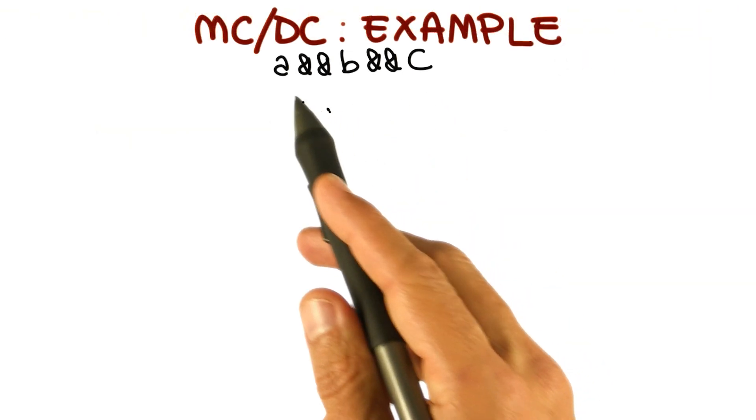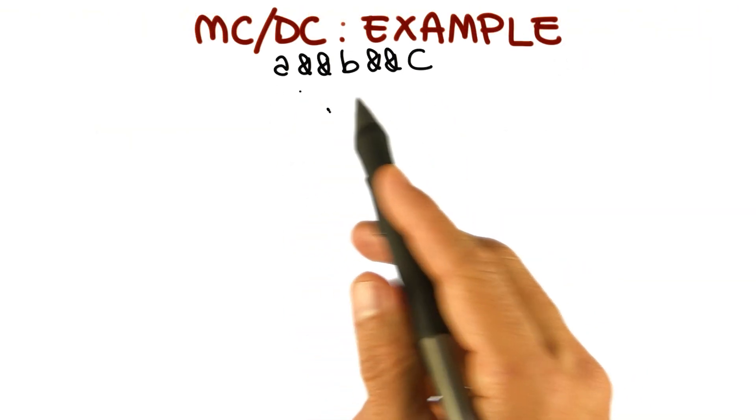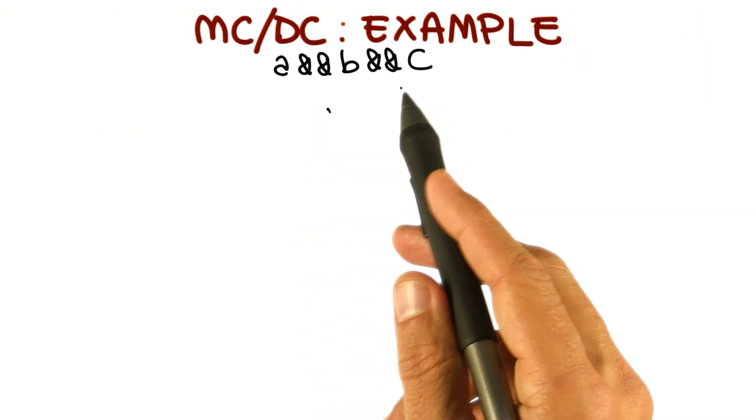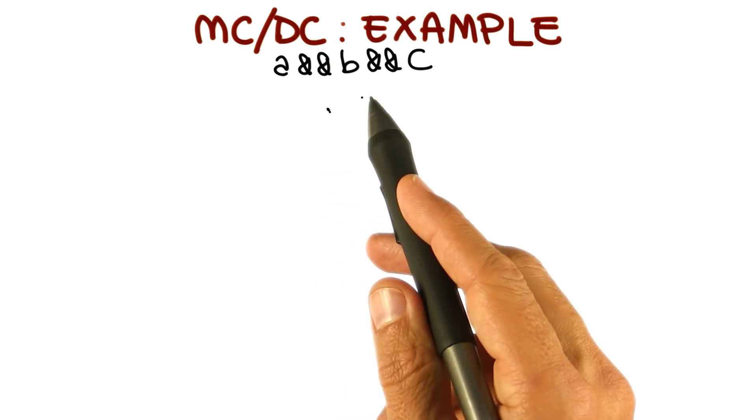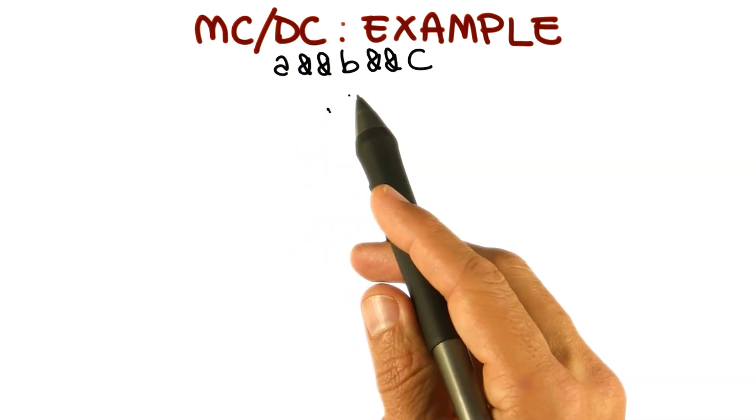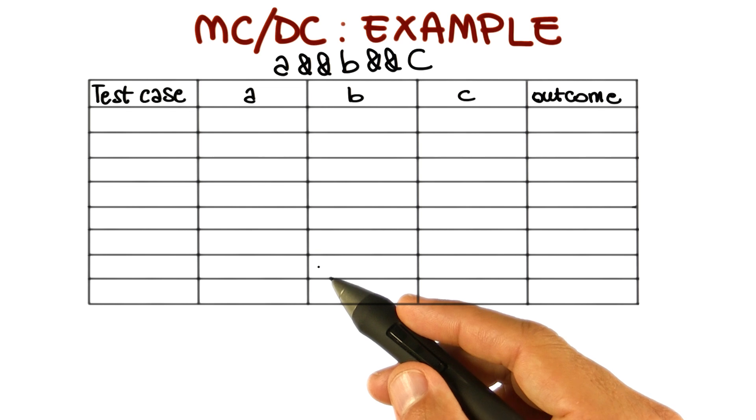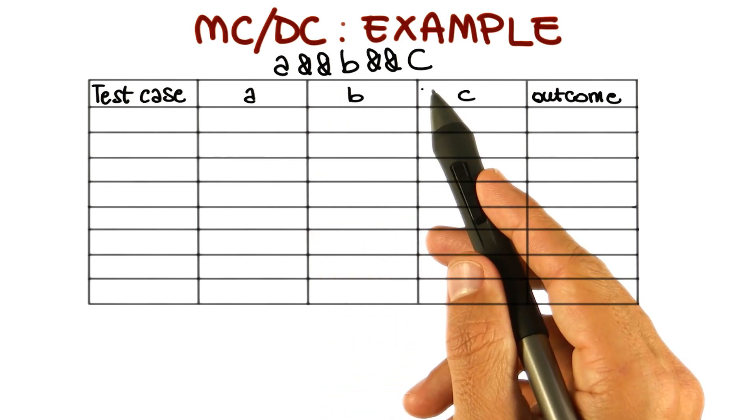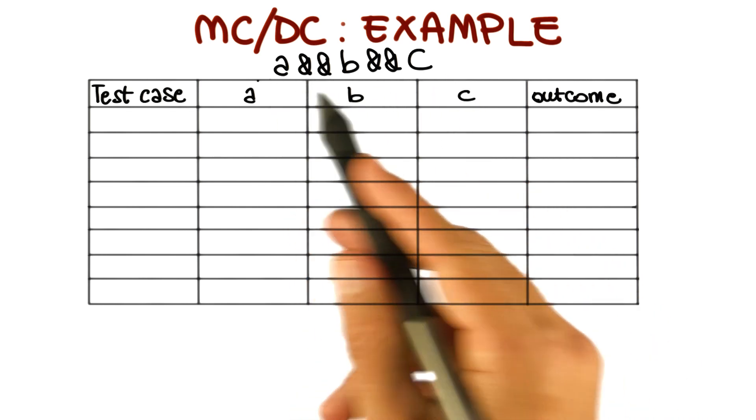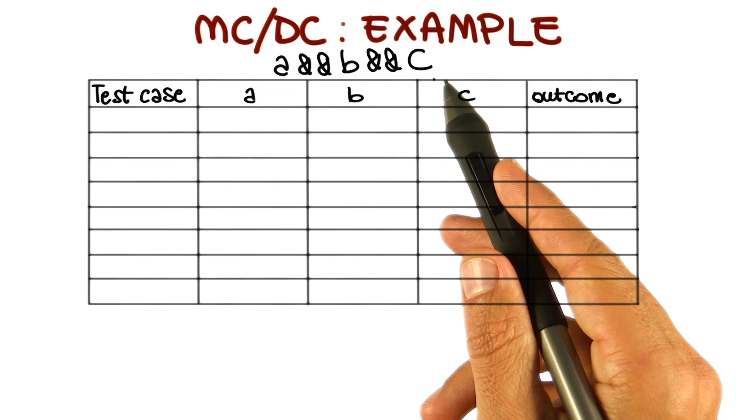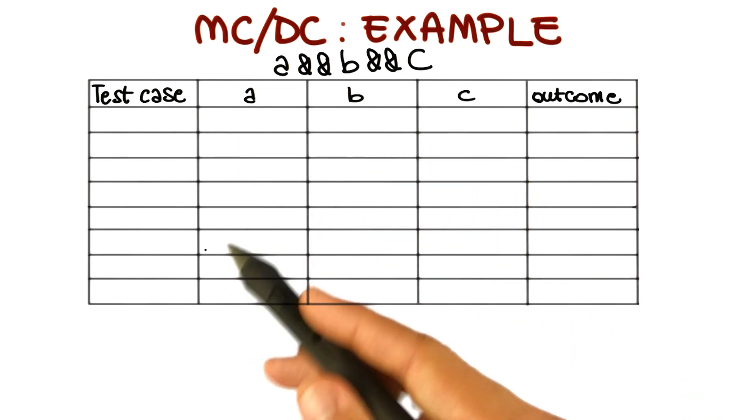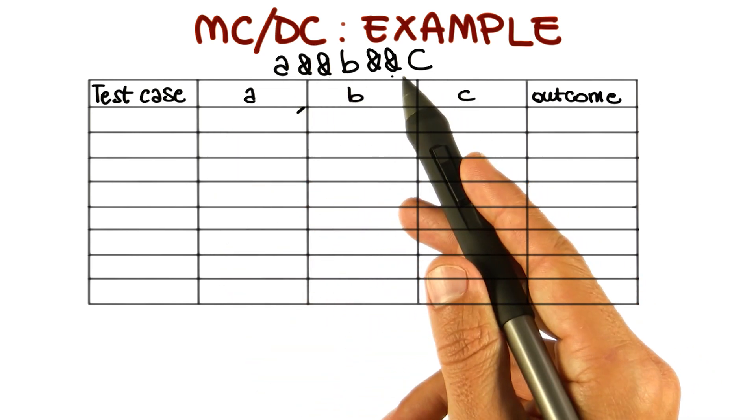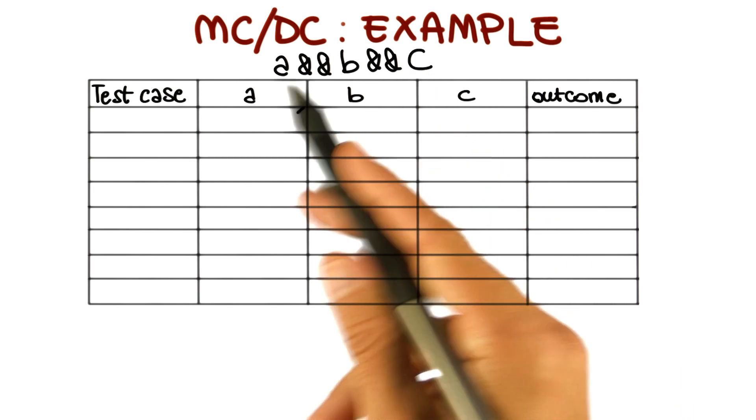I'm going to show you an example of how MC/DC works using this predicate, which consists of three conditions A, B, and C, which are all in AND. So the overall predicate is A and B and C. The first thing I'm going to do is show you how many test cases we need to satisfy multiple condition coverage for this simple predicate, which means how many test cases we need to test all possible combinations of true and false values for these conditions.